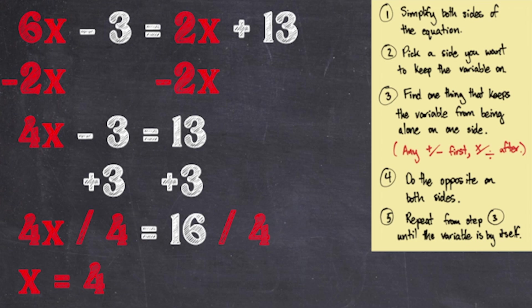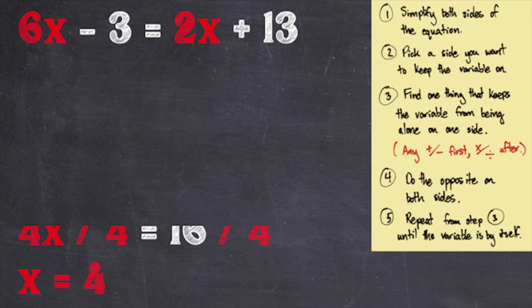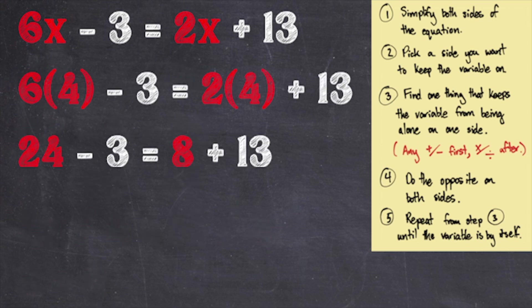Pause the video and check your work. Once you're done, unpause and see how we checked our answer. When checking your work, you should get 21 as the result on both sides of the equation, which means our equation is true and our answer of 4 is correct.